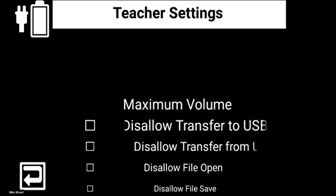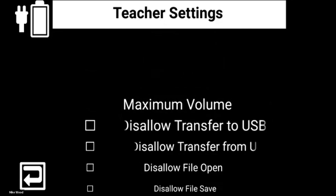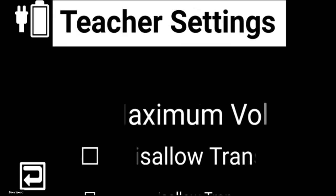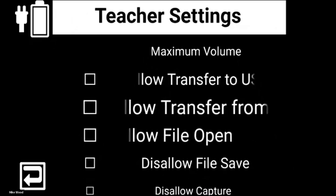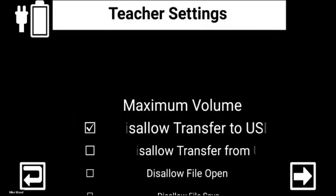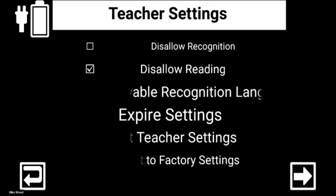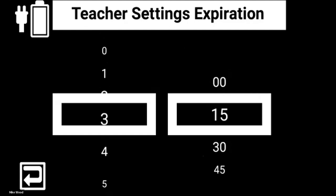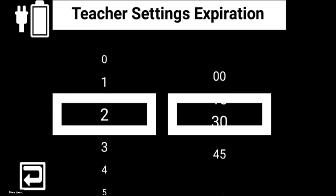Inside here I'll scroll up. The reason some items are scrolling left to right is because I have a larger font size — I can press the plus button or pinch and zoom to shrink the screen. I can choose my maximum volume setting by tapping and scrolling. Disallow transferring to USB — yes. Disallow file opening — yes. Disallow reading — yes, because this is a reading exam, so we want them to read. Set expire settings: I'm going to set it for two hours exactly. You can go anywhere from zero to ten hours in 15-minute increments.